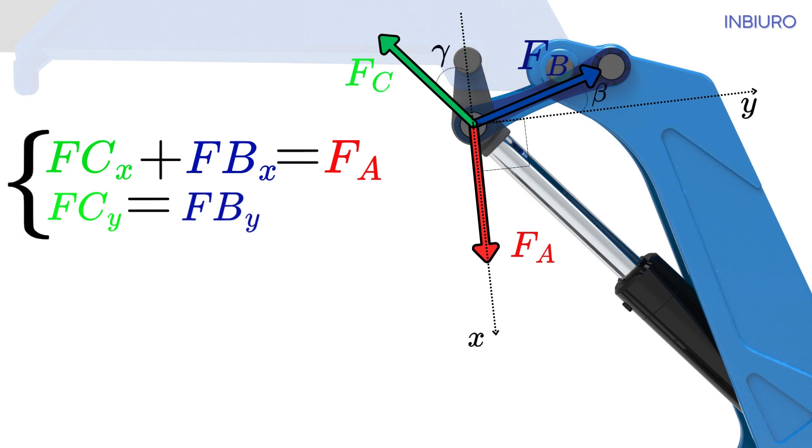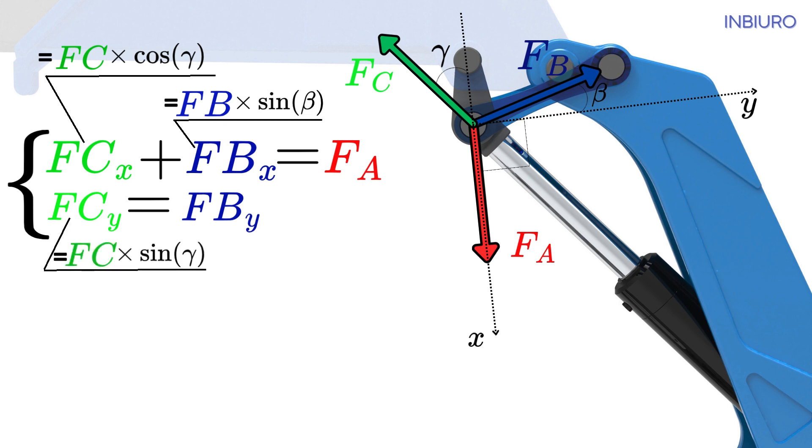Now, you know that F C X equals F C times cosine of angle gamma, which is known from your geometry, and F B X equals F B times sine of angle beta. Similarly for the y-axis projections.